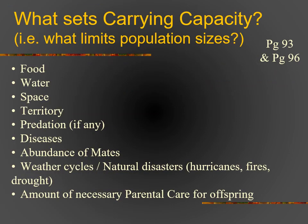So what actually limits how big your carrying capacity can be? There are a number of factors — from below you on the food chain or above you, or competition to the side. These include food, water, space, territory, predation, disease, abundance of mates, weather cycles, and natural disasters. Also how fast you reproduce and how much parental care offspring require — elephants and whales have parental care lasting years or decades, whereas mice can reproduce in under 30 days. All of this affects carrying capacity differently for each species.